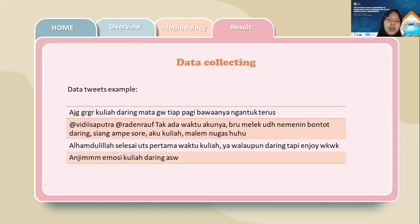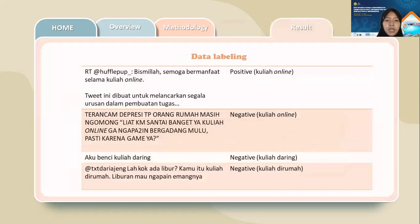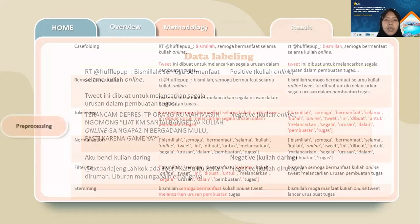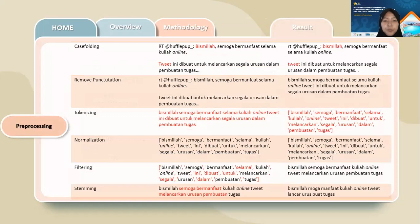This is a data tweet example. Next is data labeling, which is carried out by linguists who understand the structure of the Indonesian language correctly. Next is pre-processing, which consists of case folding, remove punctuation, tokenizing, normalization, filtering, and stemming. This is an example of the implementation.